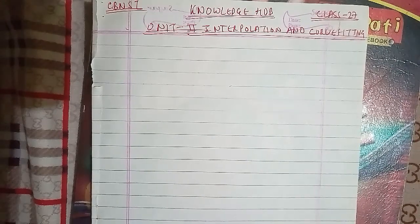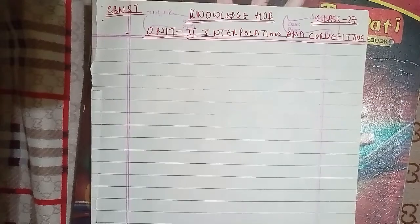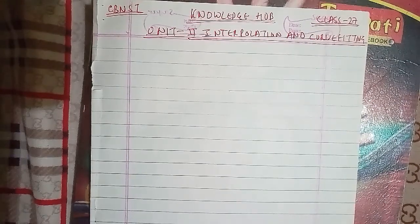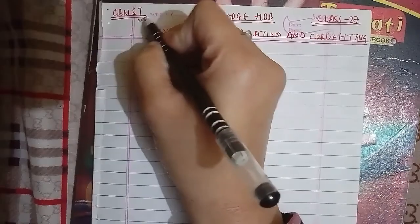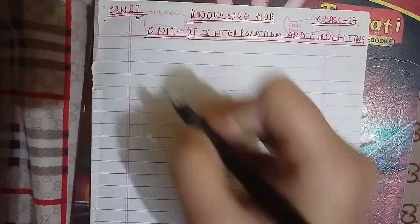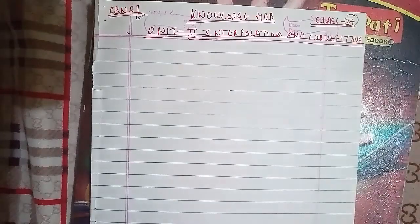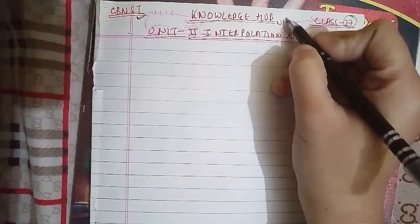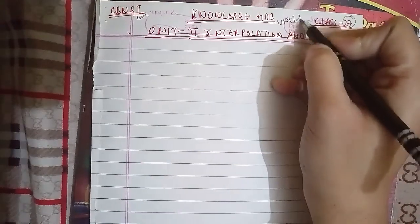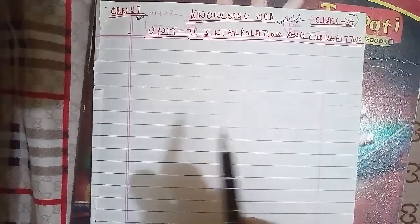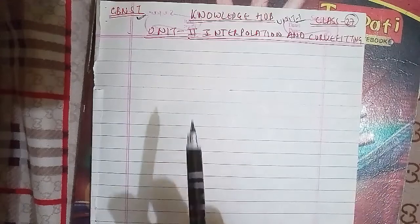Hello everyone, welcome to the channel Knowledge of Parents. Subscribe to our channel and click the bell icon for the latest updates. Today we want to start with CVNST, which has been the computer-based numerical and statistical technique. We have to cover up the 27th class. In the last classes we had done 26 classes, covering unit 1: computer arithmetic, statistical and numerical technique.